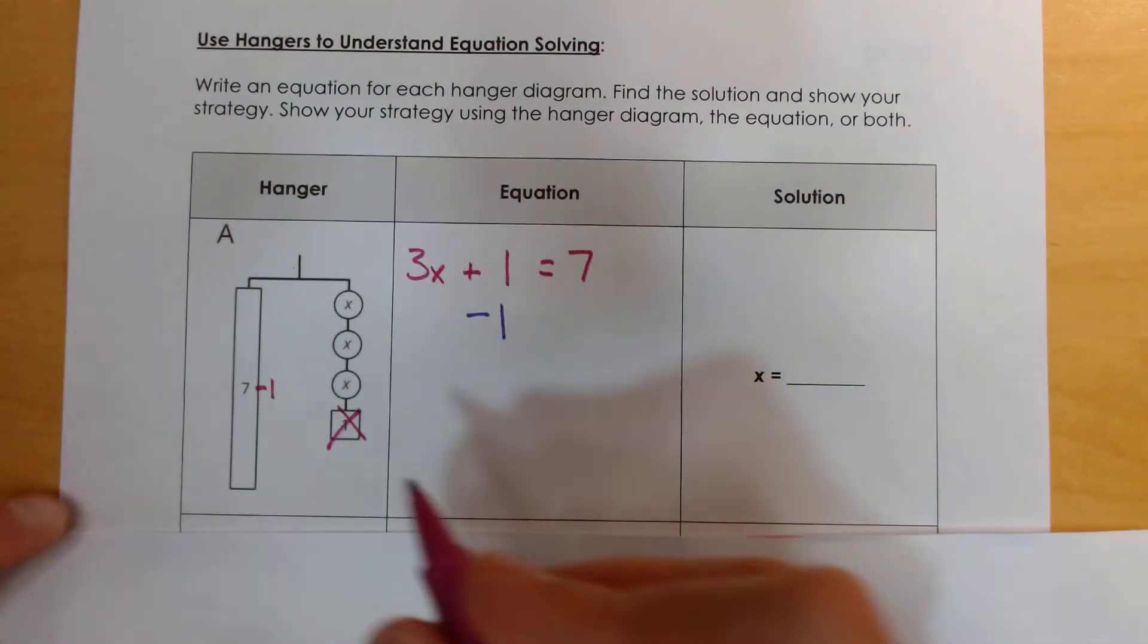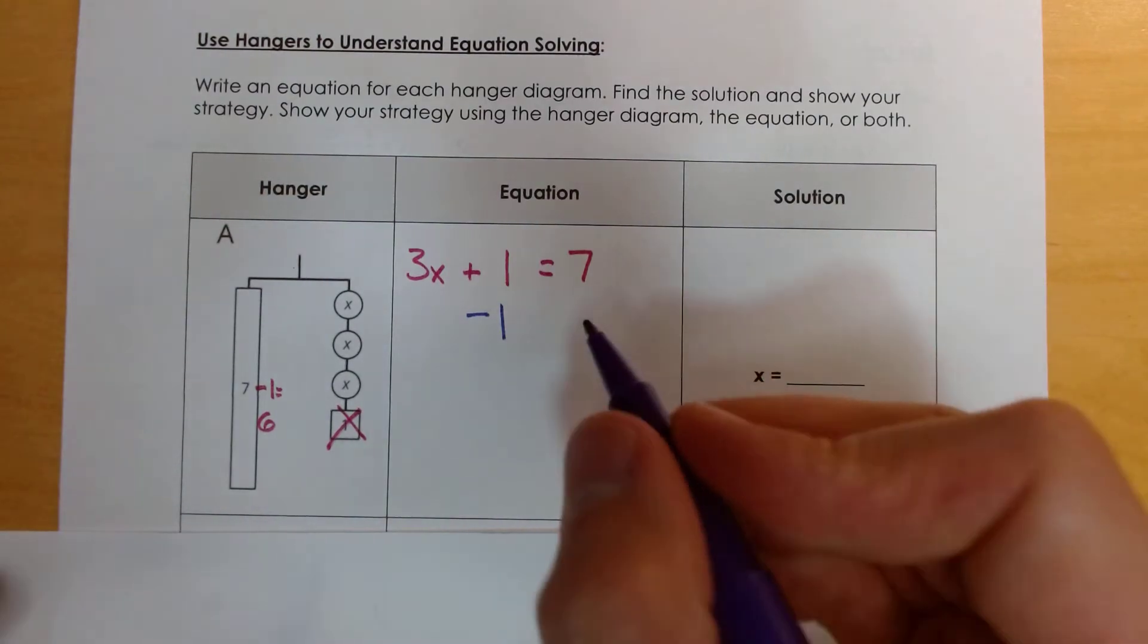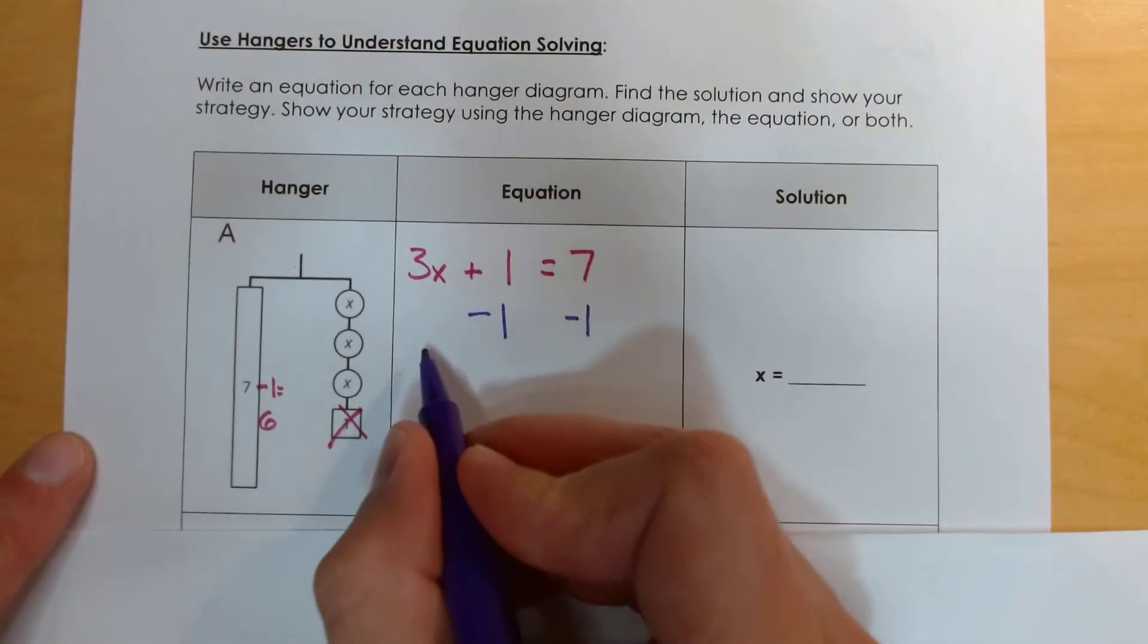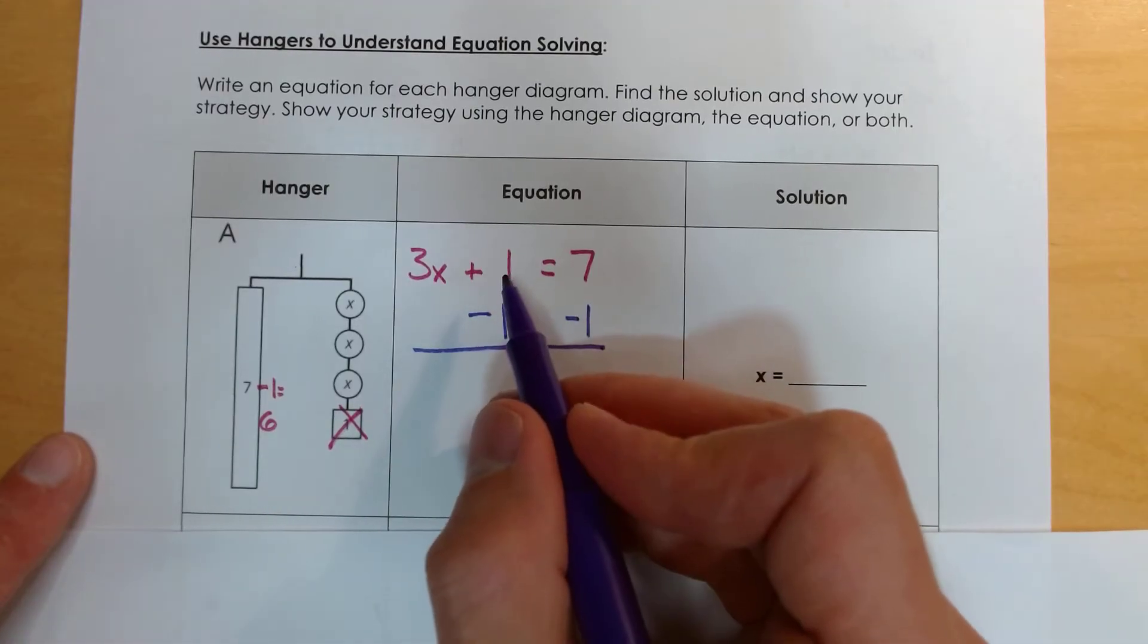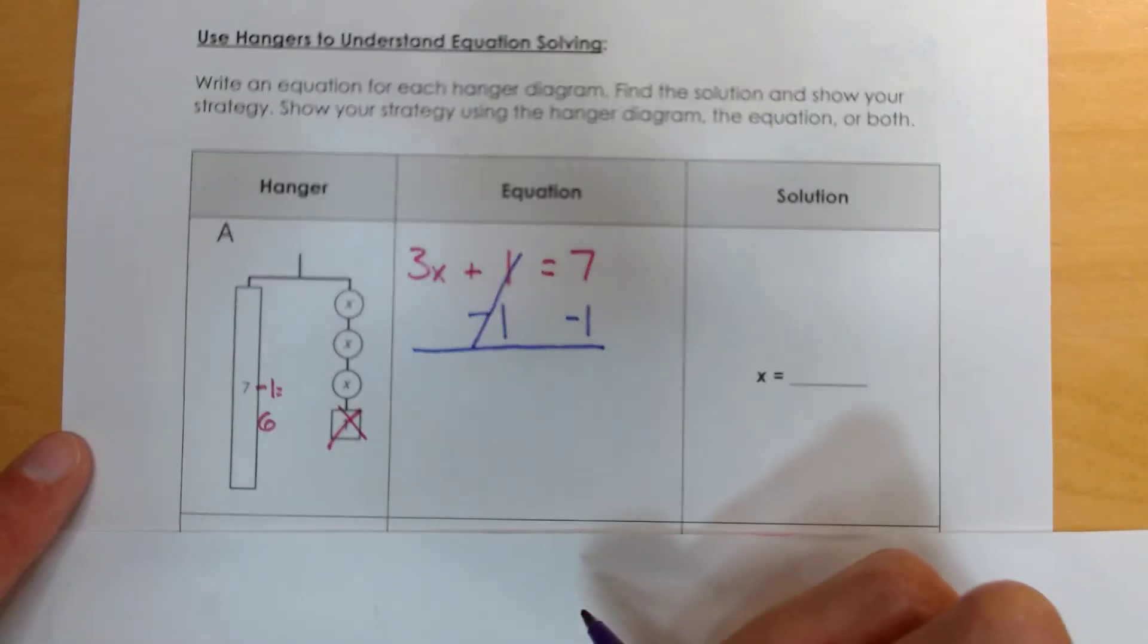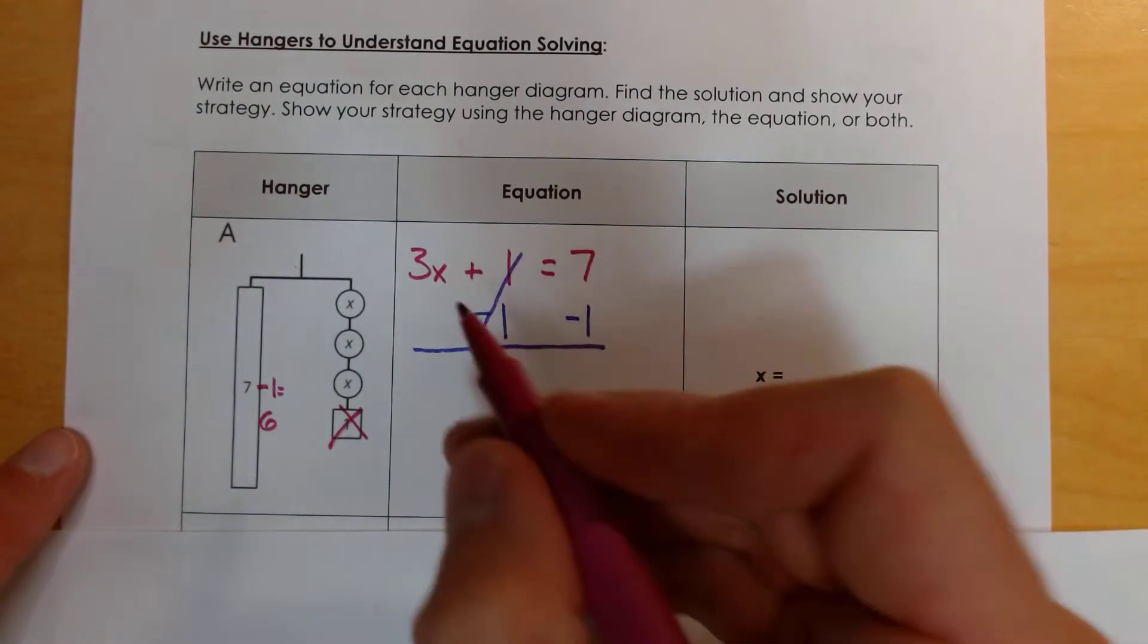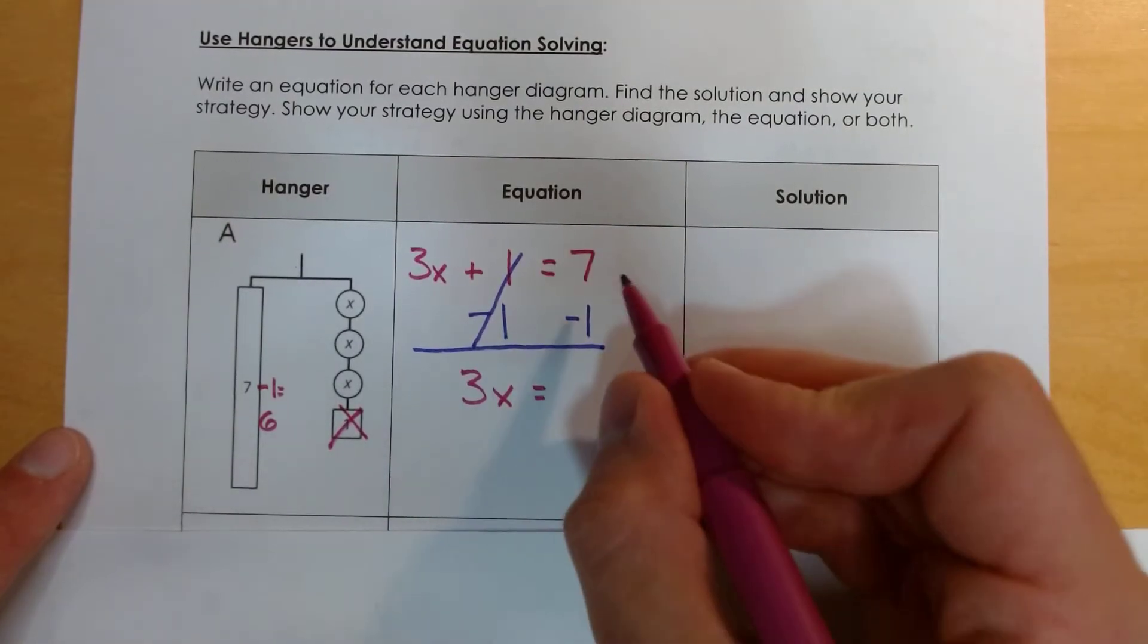So now I have 6 over here on the left side. So I'm going to remove 1 from this side of my equation as well. Now 1 minus 1 makes 0, right? So these basically cancel each other out. Some people like to draw a line through it to show that they've canceled out. So what I'm going to write is 3x equals 6. And I can see this in my picture.